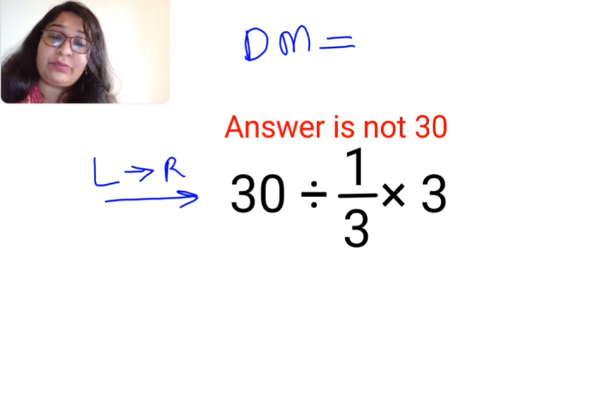Okay, so the first operation you will do is 30 divided by 1 upon 3. Now whenever there is a fraction involved in division, you will follow the acronym of KCF.